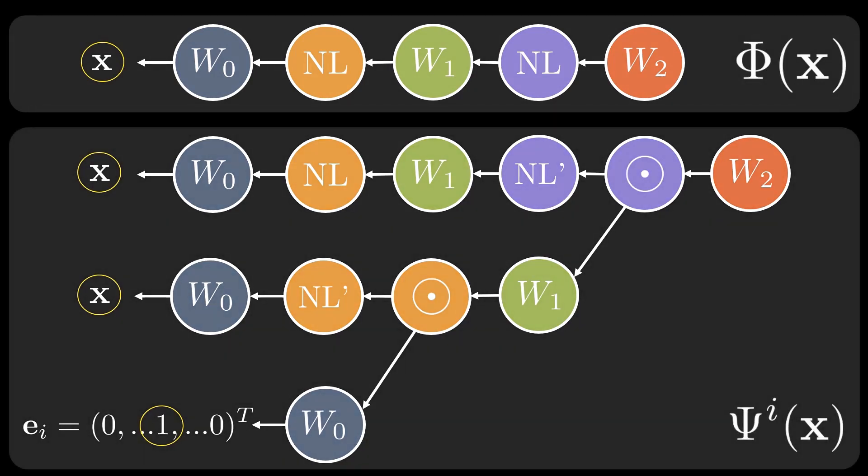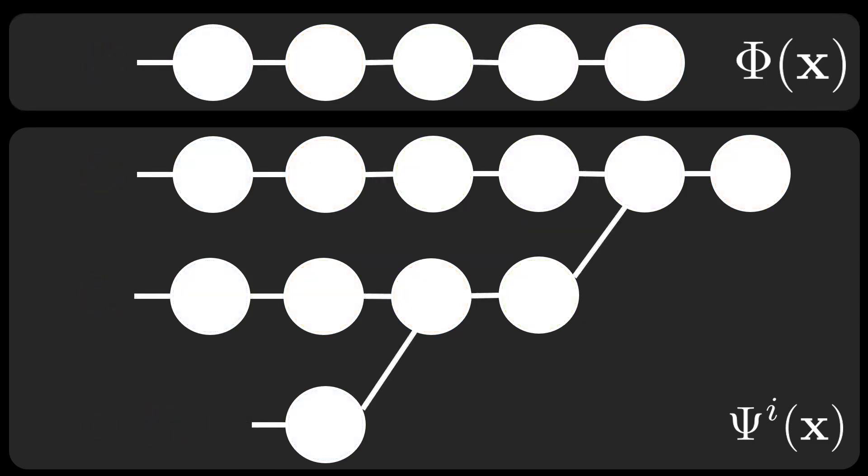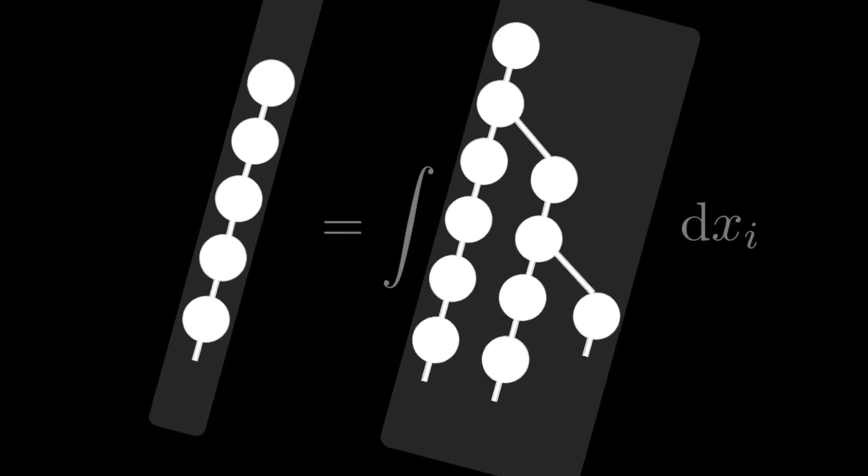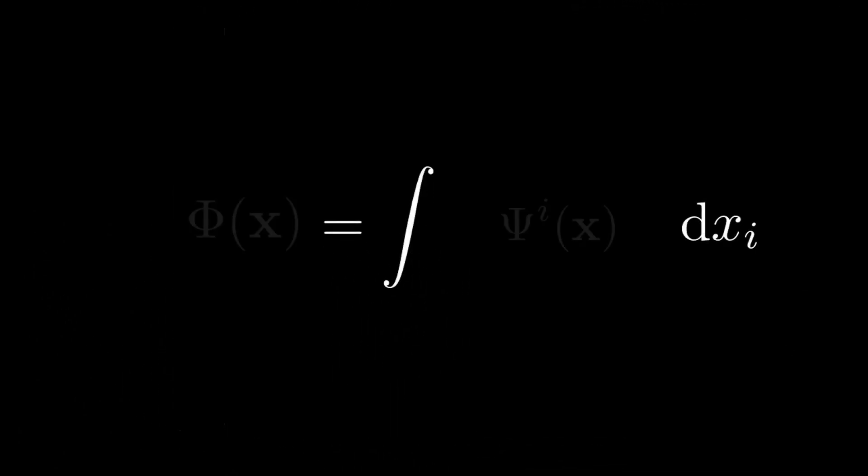A key insight is that we can train the grad network to represent signals. After, we use the learned weights to reassemble the integral network, which, by construction, represents an antiderivative of the fitted signal.